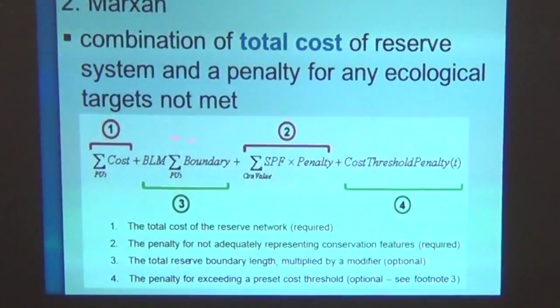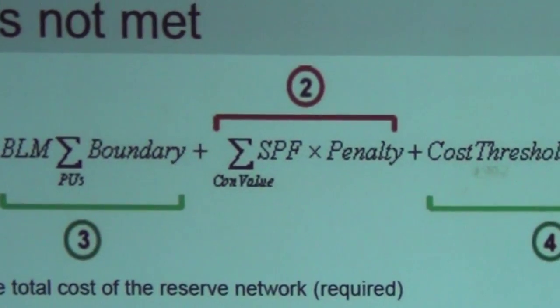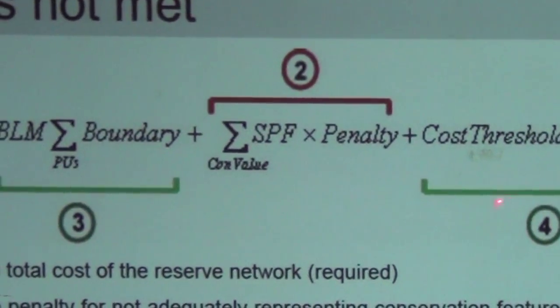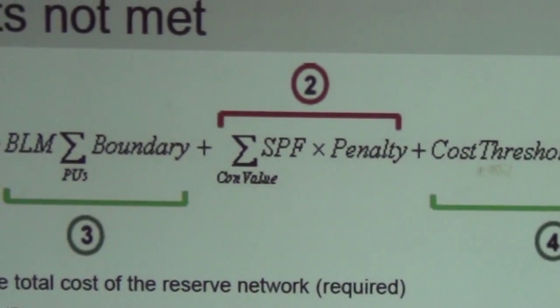A student asks how to analyze using the Marxian algorithm, noting they don't understand how to use the equation. The instructor clarifies that they don't actually do these calculations manually — the algorithm is based on the equation, so users only need to provide the pieces that go into it, not perform the calculations themselves.